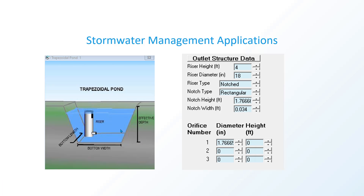How does this apply to stormwater management? When designing things like ponds or trapezoidal ponds in WWHM 2012, WIM Swim, or any other stormwater package, you'll typically need a tank and riser with an orifice in the pond. These serve a few different purposes. You can see a diagram on the left showing how that might look in your pond, along with a screenshot from WWHM 2012 showing all the factors involved.